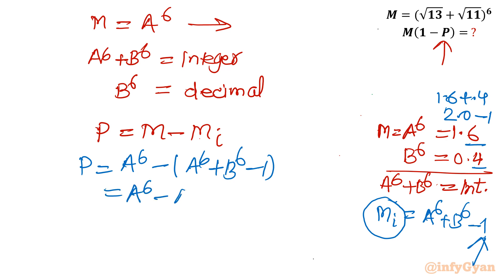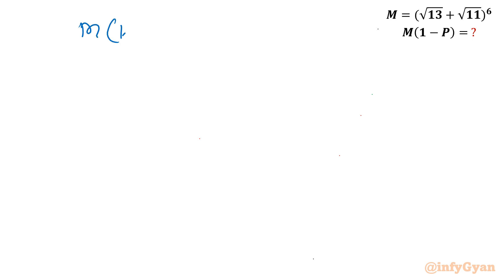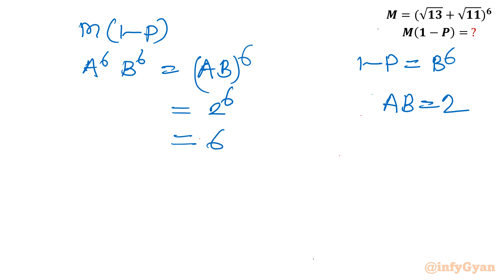Now I will find m times (1 minus p). We just calculated that 1 minus p equals b⁶, and m equals a⁶. So m times (1 minus p) equals a⁶ times b⁶, which is (ab)⁶. Since ab equals 2, this is 2⁶, which equals 64. That is our final answer.